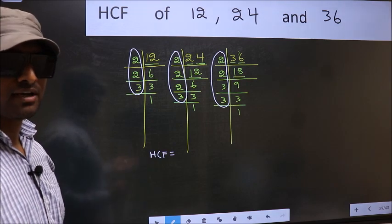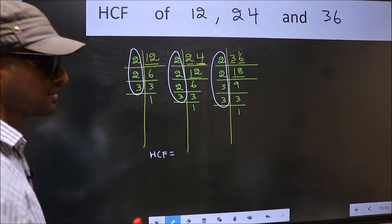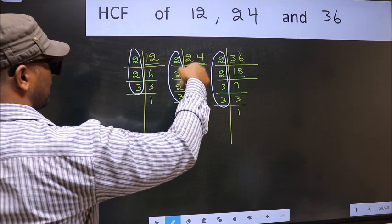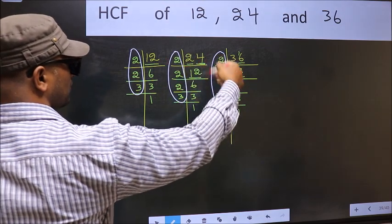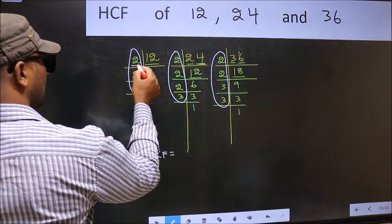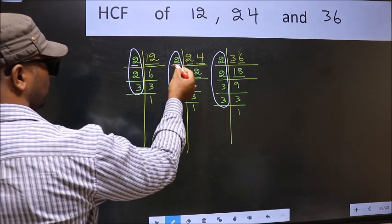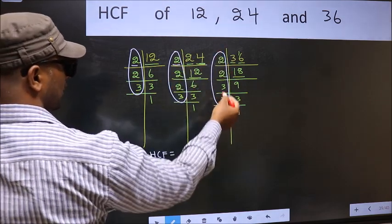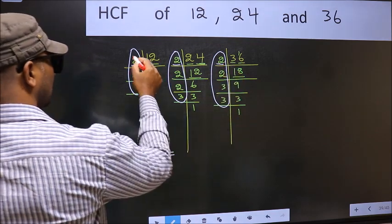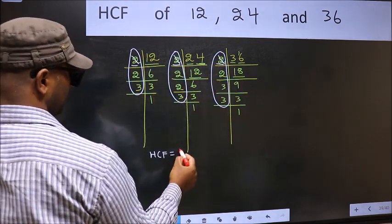So now let us find the numbers which are present here, and here, and also here. Starting with the number 2. Do we have 2 here? Yes. Go to the next place. Do we have 2 here? Yes. So cut 2 right here.